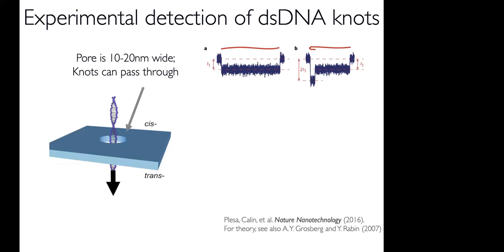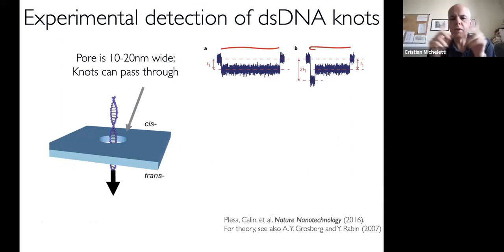For the sake of having a complete story, maybe I will just complete this part about translocation and skip the synthetic knots. Very recently, there have been experimental breakthroughs that have allowed people to use the same setup with very narrow pores to do sequencing and use that to detect with unprecedented detail the amount of knots.